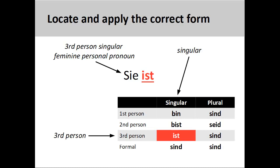Although it may be difficult to memorize the four principal parts of irregular and strong verbs, with repeated practice you will begin to notice patterns that will help you. The main thing is not to give up and to keep trying.